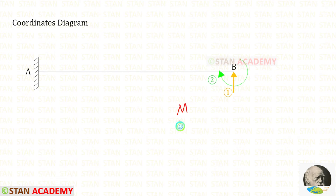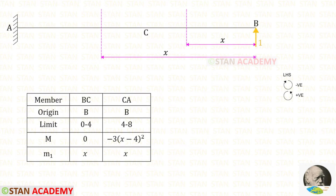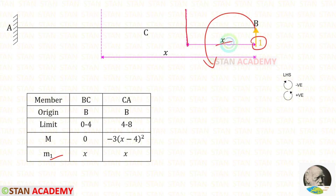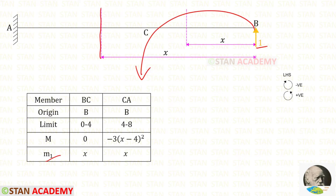Now we are going to find the moment M1. We have to remove all loads and apply unit load at the first coordinate. Our first coordinate is RB, acting upwards, so we apply unit load in the upward direction at point B. The moment M1 in CB: the unit load is acting anti-clockwise, so it is positive and M1 = 1 × x = x. In CA, the unit load is also acting anti-clockwise, so M1 = x as well.